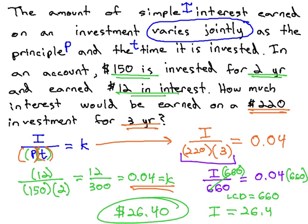Again, to solve this variation problem, we first identified the type of variation to give us a formula, use the given information to find the constant, and then use that constant and the formula to solve for the missing value.